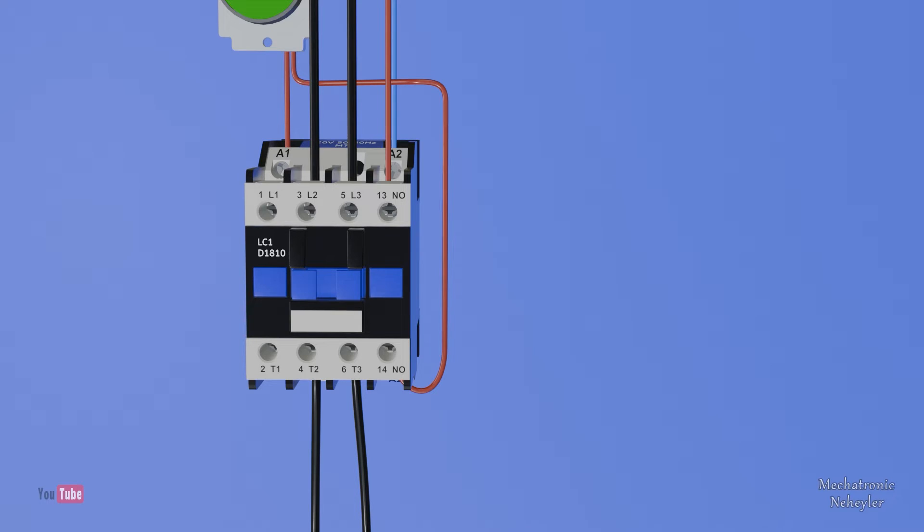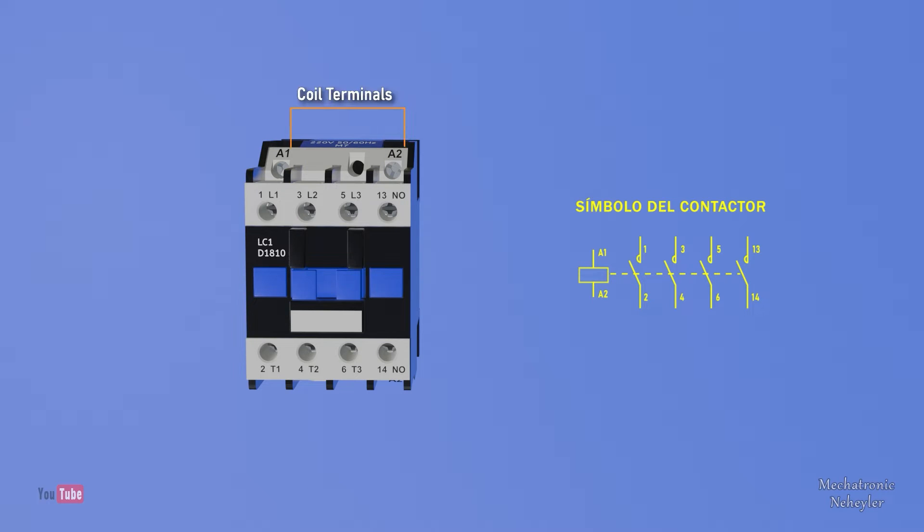Let's quickly identify the contactor connection terminals. Terminals A1 and A2 are to energize the coil. Terminals L1, L2, and L3, as well as terminals T1, T2, and T3 make up the power contacts of the contactor.